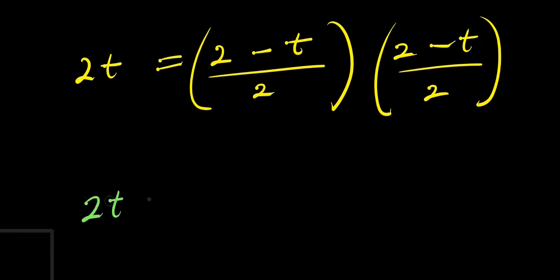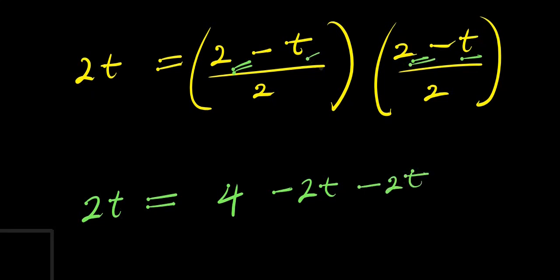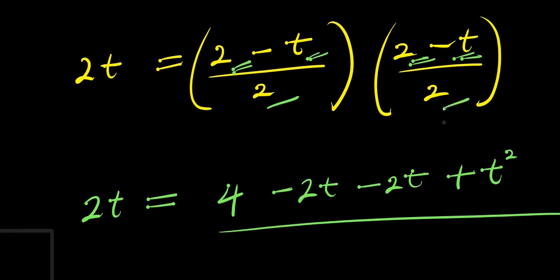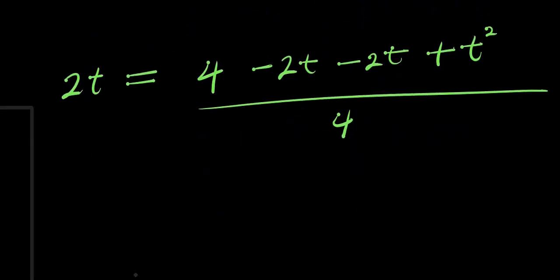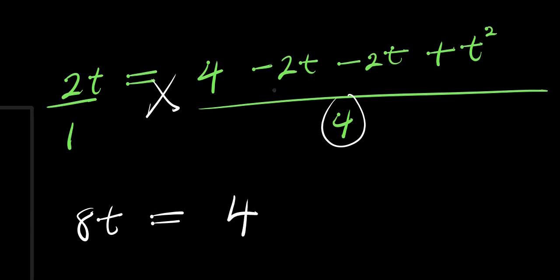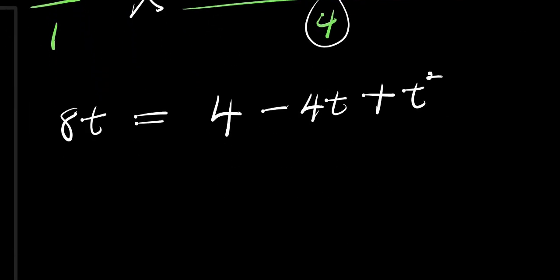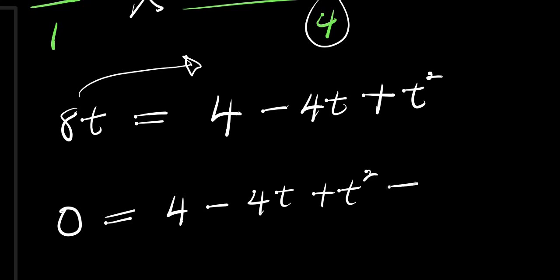Expanding the right side: 2t equals 2 times 2 which is 4, then 2 times minus t gives minus 2t, minus 2t times 2 gives minus 2t again, and minus t times minus t gives plus t squared, all divided by 2 times 2. Cross-multiplying gives 8t equals 4 minus 4t plus t squared.